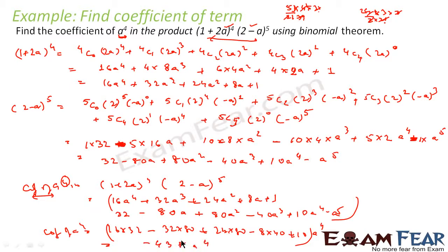So the coefficient of a⁴ is −438. What we have done is expanded the two expressions and arranged them so that products of aligned pairs give a⁴.